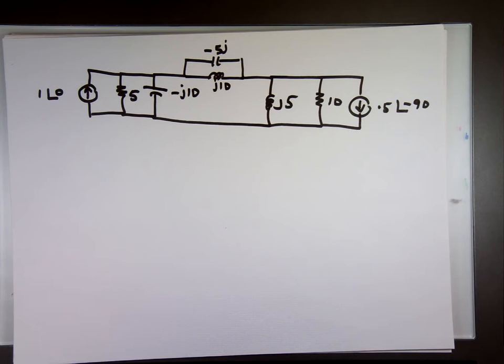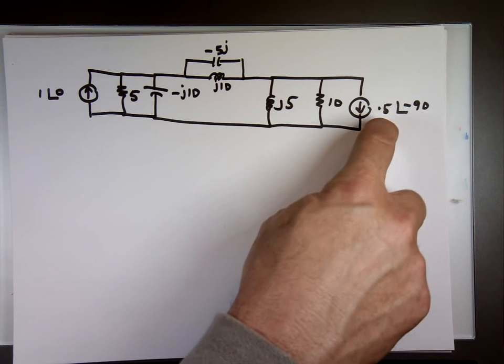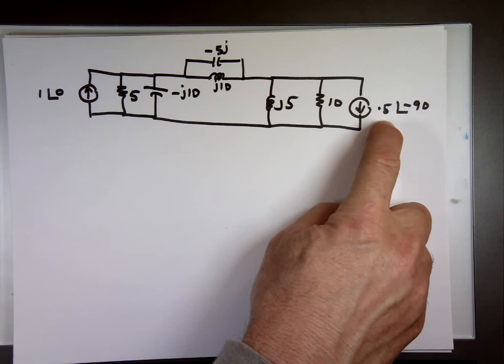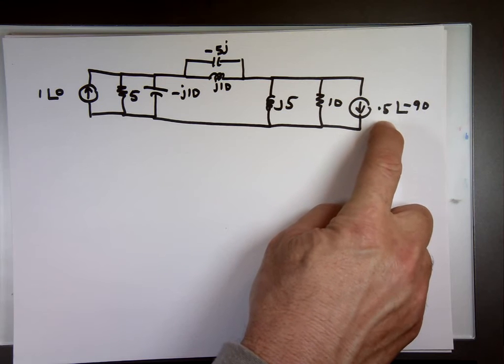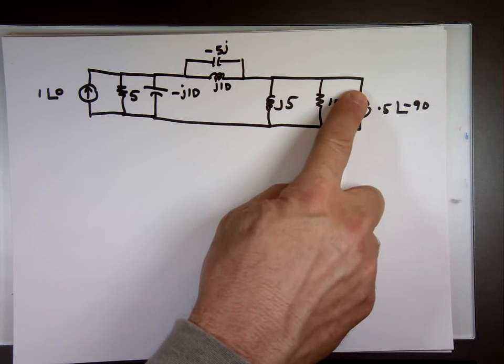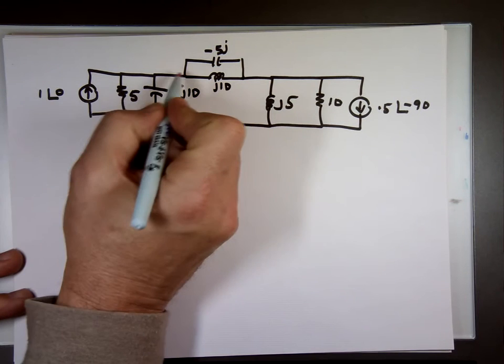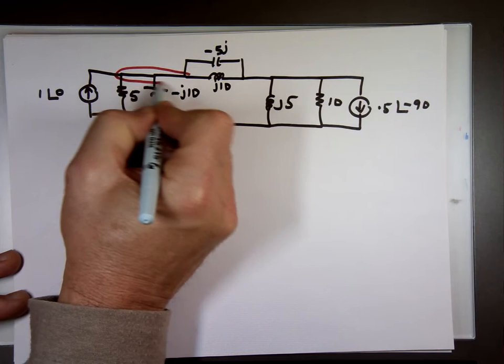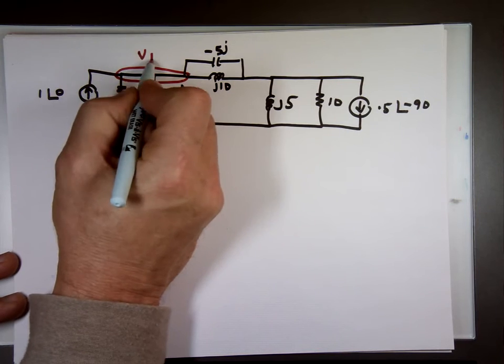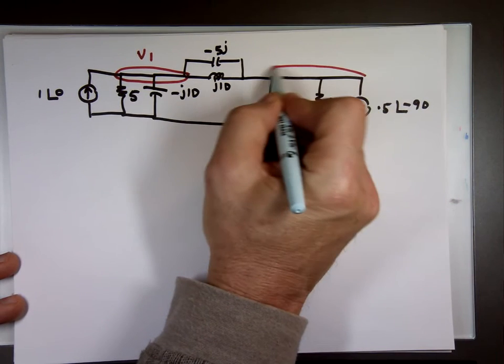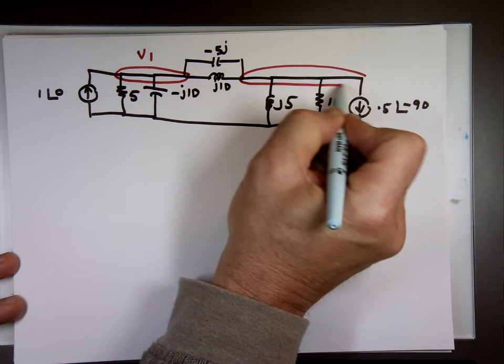A couple of things I can do. I know this number, it's negative 5j. If I want I can reverse the direction of it, make it plus 5j. I don't like negative values. If you look, there are only two nodes here. This is really node 1, V1, and this is node 2, that's it, V2.